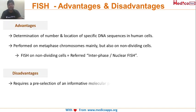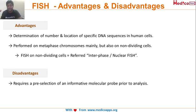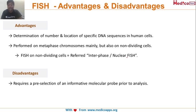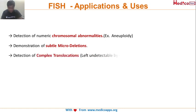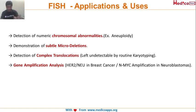The disadvantage of FISH is that it requires pre-selection of an informative molecular probe before analysis, meaning you need prior knowledge of what kind of genetic defect or gene you are targeting. Without knowing the gene sequence, you cannot design your probe. Applications include detection of numeric chromosomal anomalies, subtle microdeletions, complex translocations, gene amplification analysis, and mapping of newly isolated genes to their chromosomal loci.